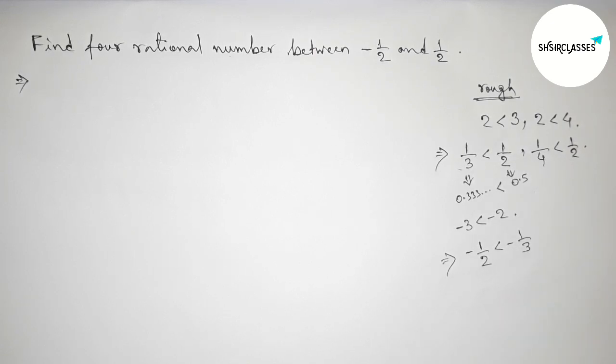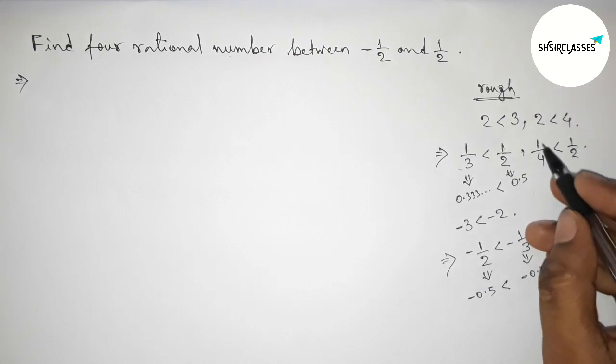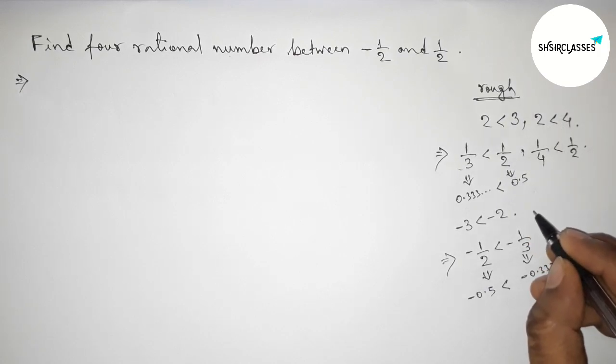Because the value of minus 1 by 2 is minus 0.5, and this is minus 0.33. We know that less negative number is always greater than more negative number. Now taking similarly minus 4 less than minus 2.